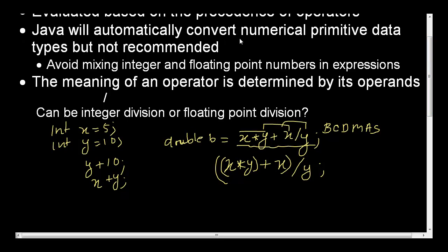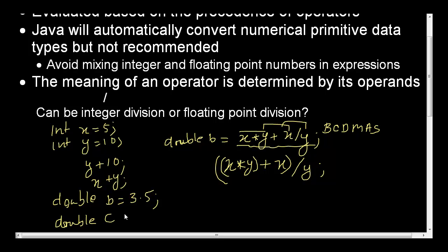Another thing Java will automatically do is convert numerical primitive data types. For example, you have int x equal to 5, y equals to 10, and double b equals to 3.5. And you can say double c equals to b plus x. In this scenario, Java will actually convert the lower precision value — since b is of type double and x is of type integer, it will do a conversion and assign it to the double value c.